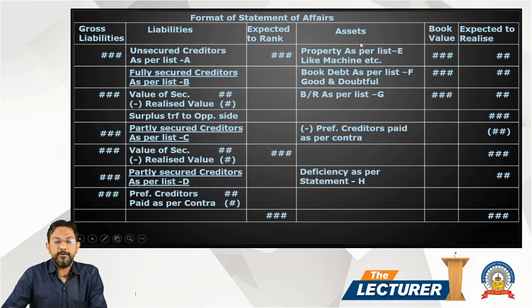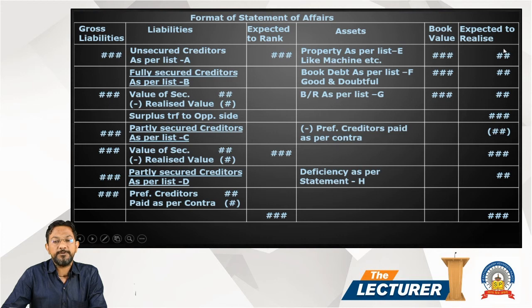On the left-hand side are liabilities; on the right-hand side is property as per List E — for example, machines, cash, bank, etc. — shown with both book value and expected realizable value.